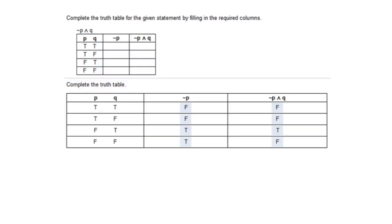When making your own truth table, for the p column start with two trues and then two falses. For the q column, alternate starting with true: true, false, true, false. That's how you set up truth tables — half true, half false for p, and alternating true-false for q.